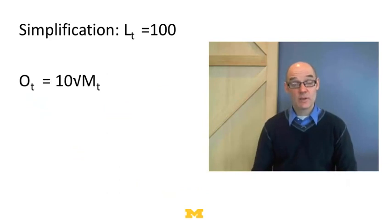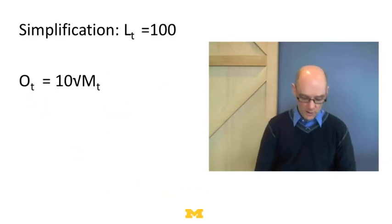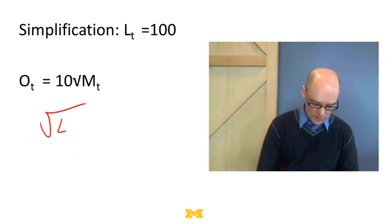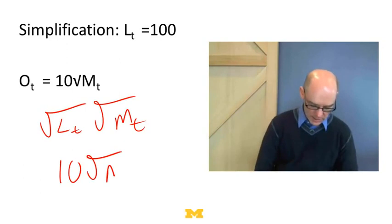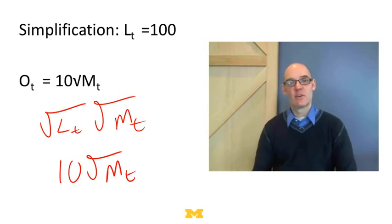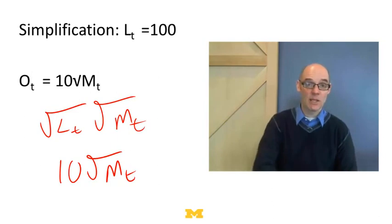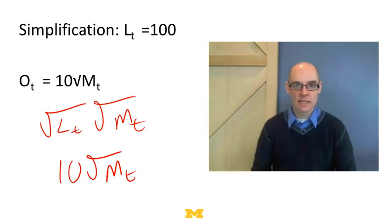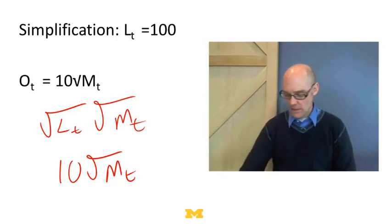Let's simplify things. Let's assume we've got 100 workers. Before, our output was equal to √(L_t) × √(M_t). With 100 workers, that's just 10 times √(M_t). In a more realistic model, we'd have workers deciding to work depending on the wage, and we'd have to create a market for wages as a function of output and how much people like the coconuts — that would get really complicated. So we're going to skip the entire labor market and just assume everybody goes to work every day.